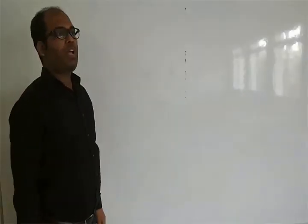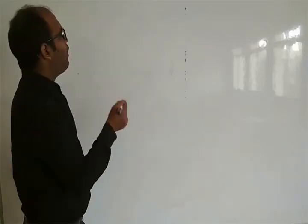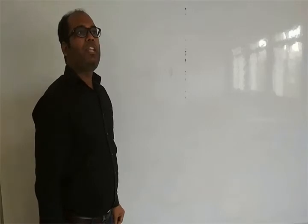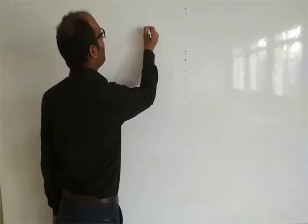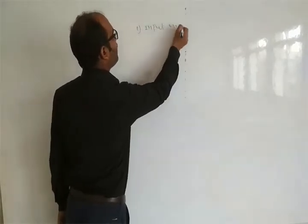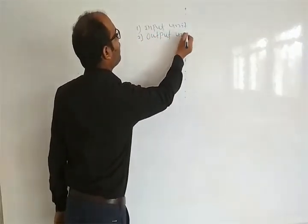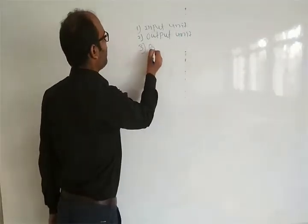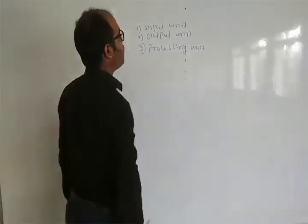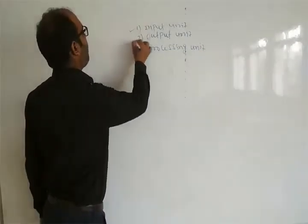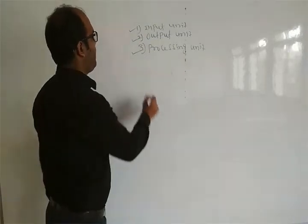Hi, this is Shifif. Today I am going to explain input process output. Now in computer we have three main parts. First one is input unit. Second one is output unit. Third one is processing unit. So one by one all the three main parts of the computer we will discuss. So first one is input.